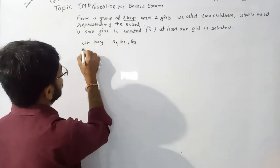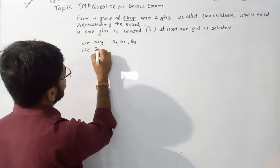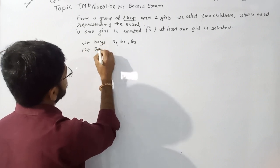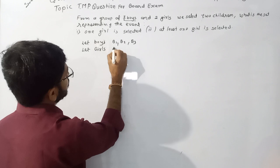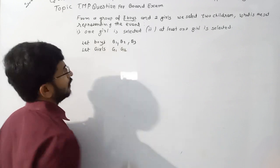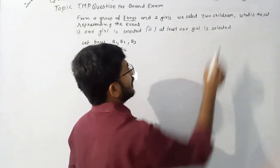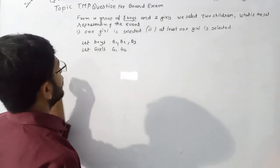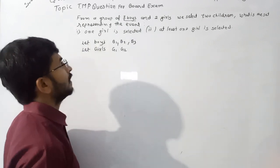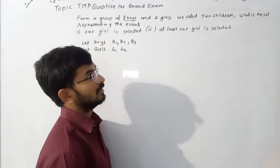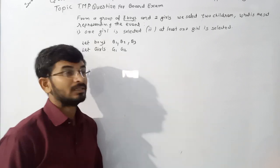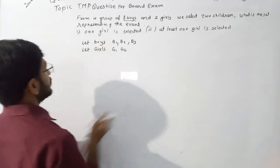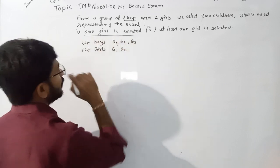And let the girls be G1 and G2. We select two children. What is the set that represents the event? So how do we represent this in set form? The first condition is that one girl is selected.